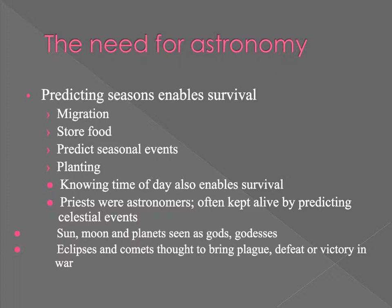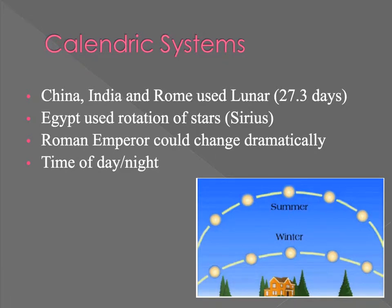Solar eclipses were especially revered because in the middle of the day the sun would be completely blocked out. All of our calendric systems have celestial origins. Our closest and most obvious neighbors to ancient peoples are the sun and moon, giving us solar and lunar calendars. Ancient Egyptians also used stellar rotations, looking to the star Sirius, which is referenced in many ancient Egyptian pyramids and tombs.